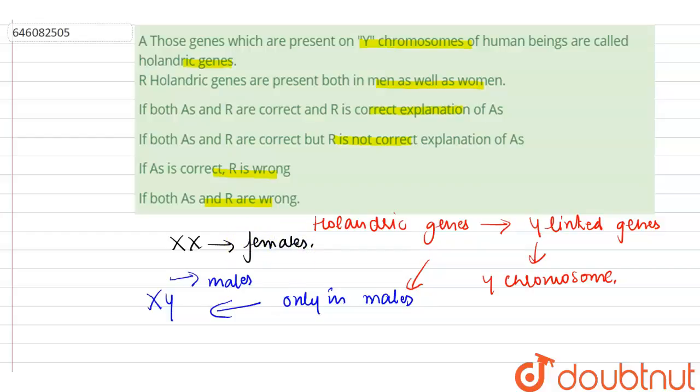So the correct option here is assertion is correct, reason is wrong, because the statement that is given in the assertion is correct, but holandric genes are not present in both men and women. So the statement that is given in the reason is incorrect. So the correct option is assertion is correct, reason is wrong.